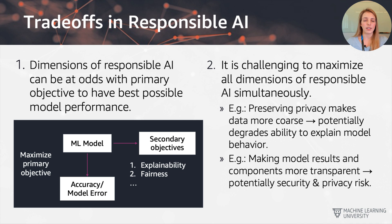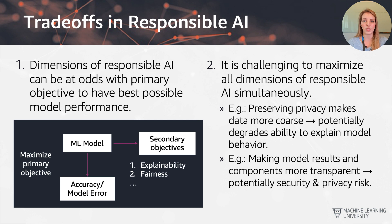There are certain trade-offs in responsible AI that we need to consider. In machine learning, the primary objective is building a model that performs well — minimizing error or maximizing accuracy. But we also have secondary objectives like explainability and fairness constraints. Unfortunately, these can be at odds with one another: trade-offs can exist between primary and secondary objectives, and also between maximizing the secondary objectives themselves.